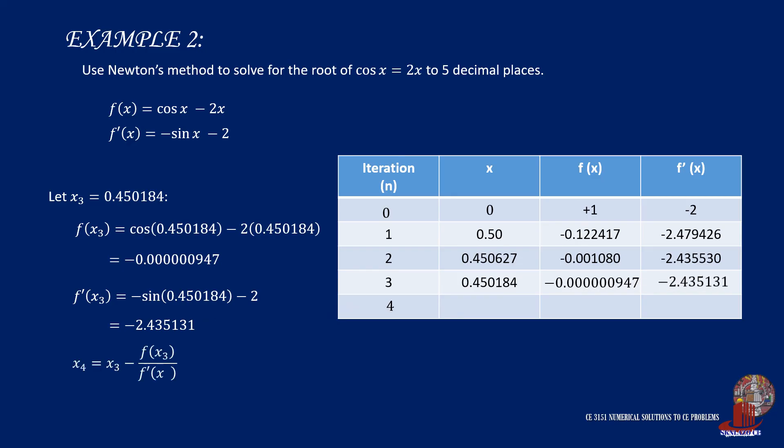Then using these values into the formula, we get 0.450184, which is exactly the same value of x sub 3. Thus, we can end the iteration as it is also reached not just 5 decimal places but even 6. The approximate truth of x is 0.450184.